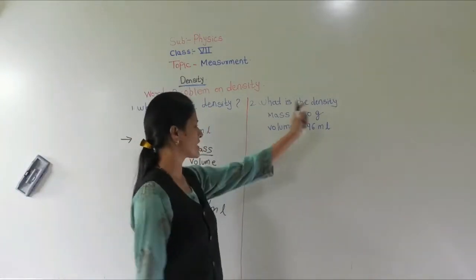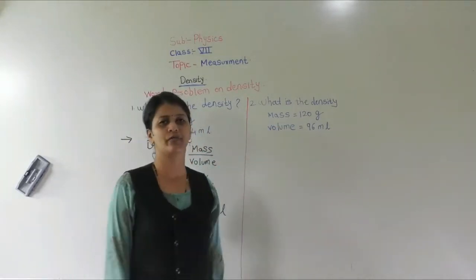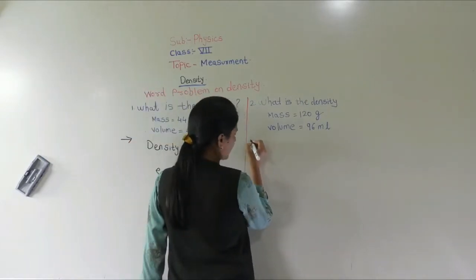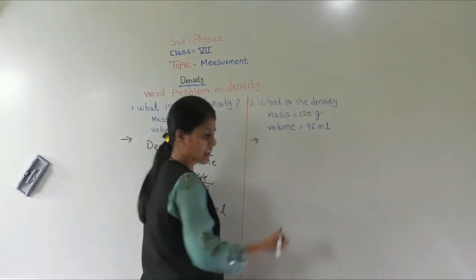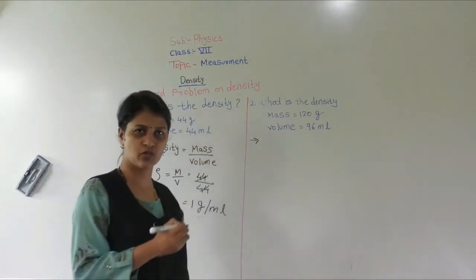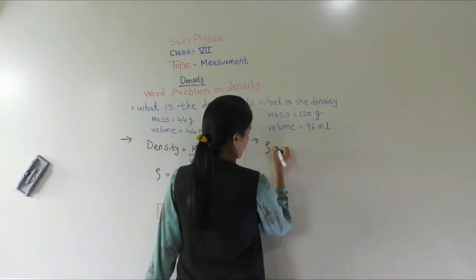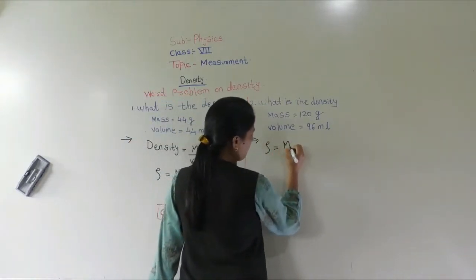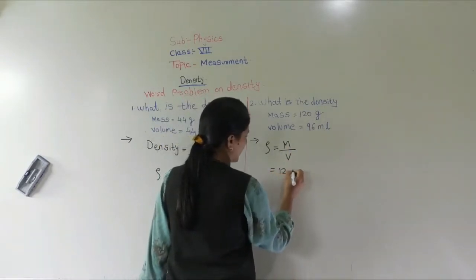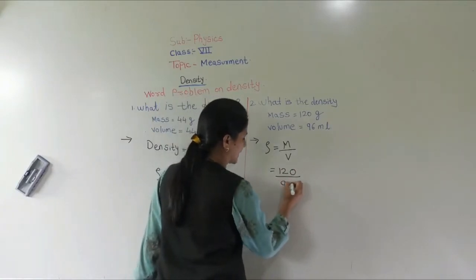The second question: what is the density if mass is 120 grams and volume is 96 ml? Again, the formula for density is rho = m upon V. When solving any word problem, you have to show the steps. Mass is 120 grams and volume is 96.